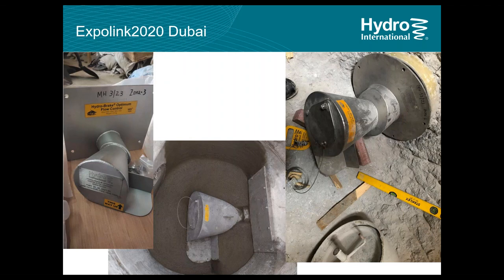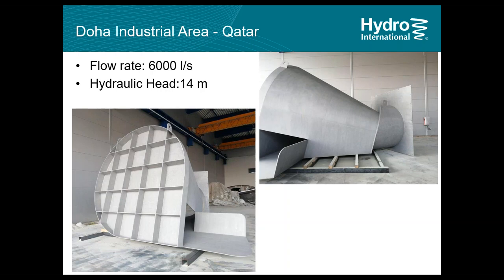This demonstrates how customizable the product is. Another example: a HydroBrake produced for a project in Qatar's industrial area with a discharge flow rate of 6,000 liters per second at 14 meters of hydraulic head. This unit controls discharge into a 3-meter diameter micro tunnel running through the industrial area. Another project in Jebel Ali Industrial Area, UAE: a very large unit designed to discharge 4,800 liters per second at 6.43 meters of head, made of super duplex steel due to high groundwater salinity requirements.